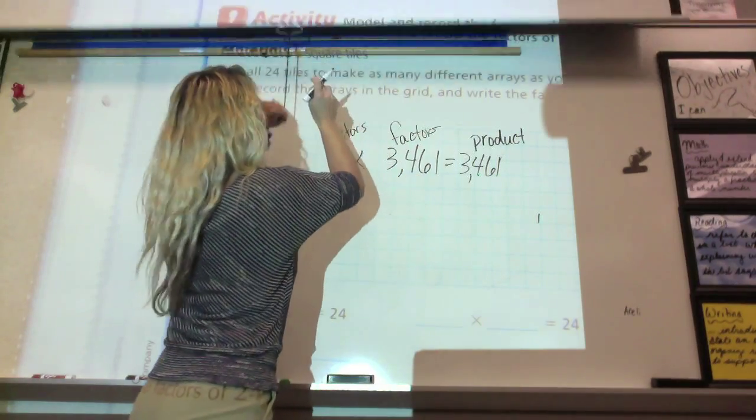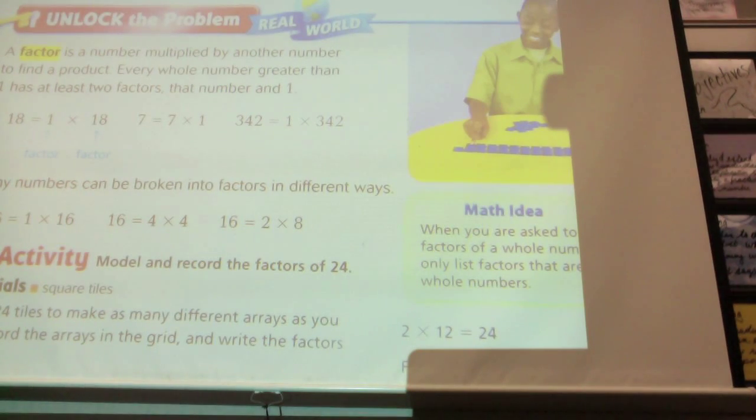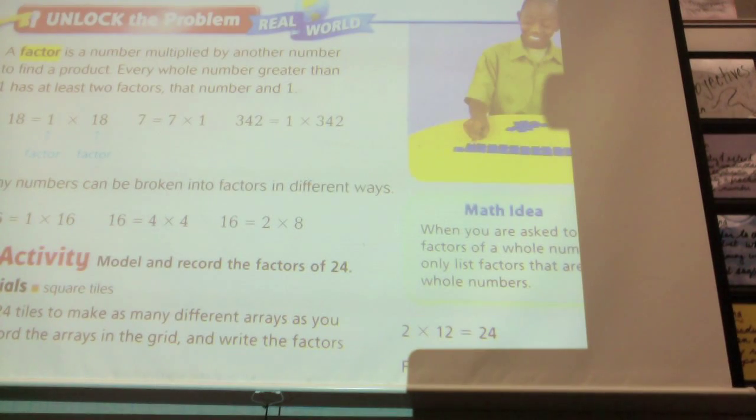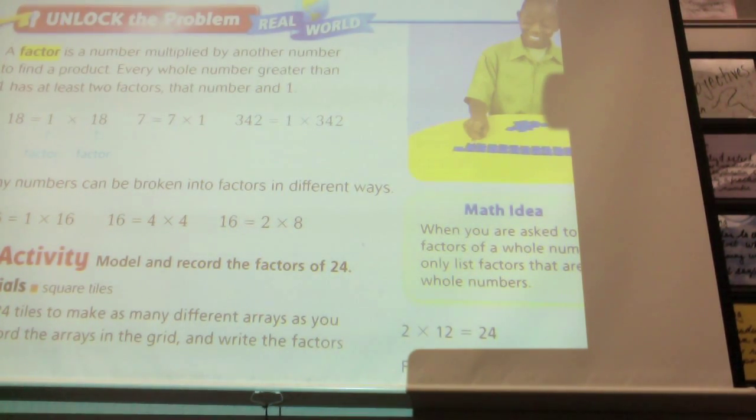And that's what we're talking about today. A factor is a number multiplied by another number to find a product. And that's what I was just showing you on the board. Every whole number greater than 1 has at least two factors. What are the two factors that every number has? It's way simpler than you guys are thinking.